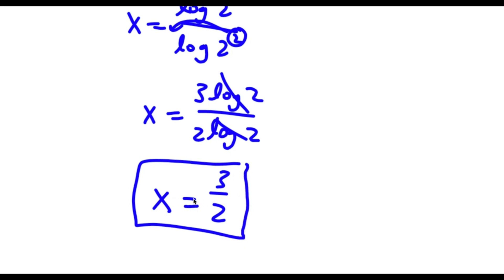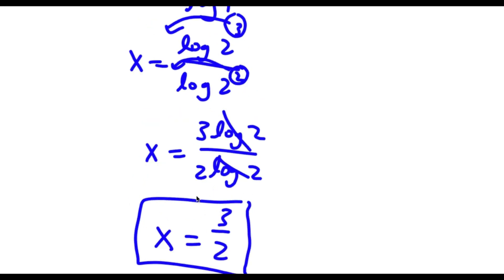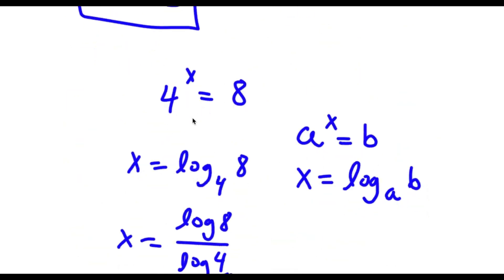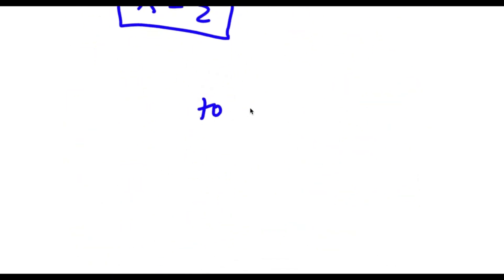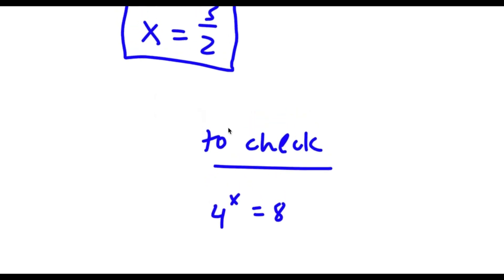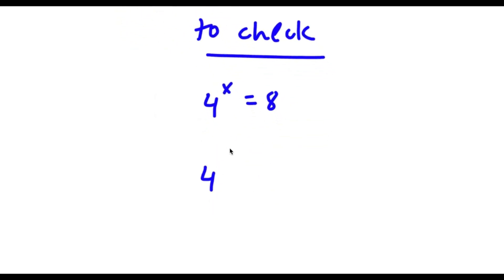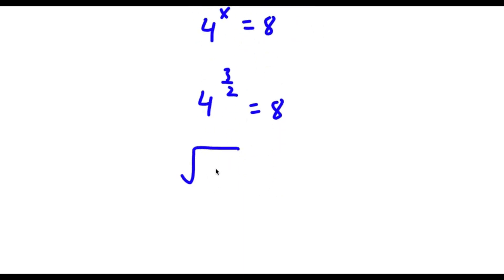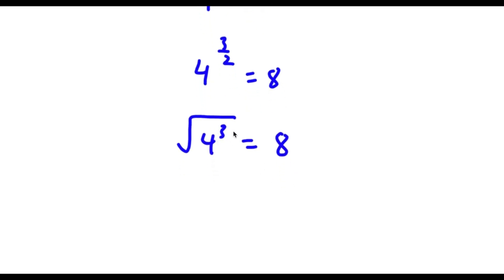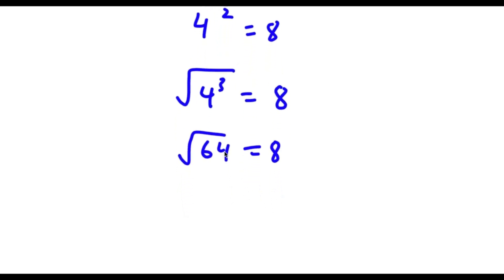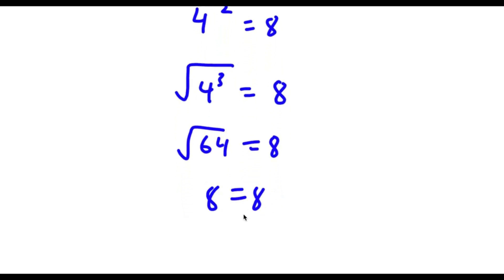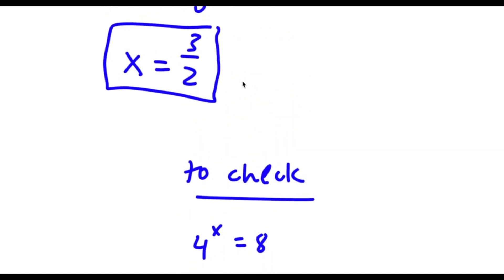So that's two methods of solving this problem. And now to check: I have 4 to the power of x is equal to 8. We know that x equals 3 over 2, so I have 4 to the power of 3 over 2 is equal to 8. Now 4 to the power of 3 over 2 is the same thing as the square root of 4 to the power of 3. And 4 to the power of 3 equals 64. So I have the square root of 64 equals 8, and the square root of 64 is 8. So I have 8 is equal to 8 — because this is right, my solution is right.